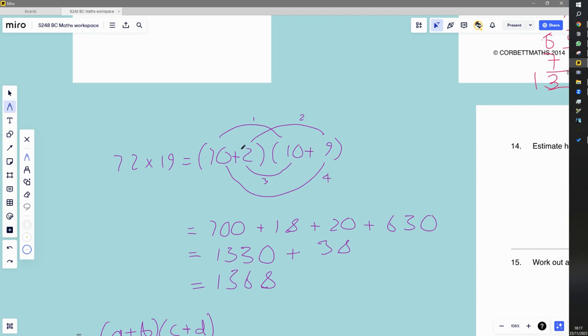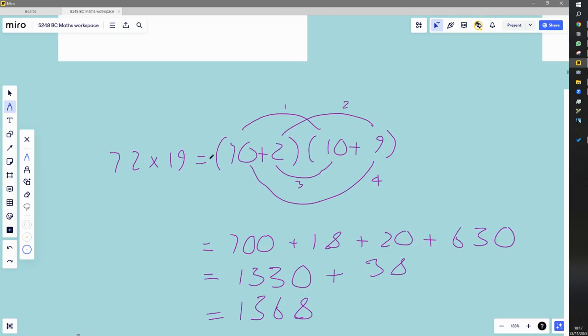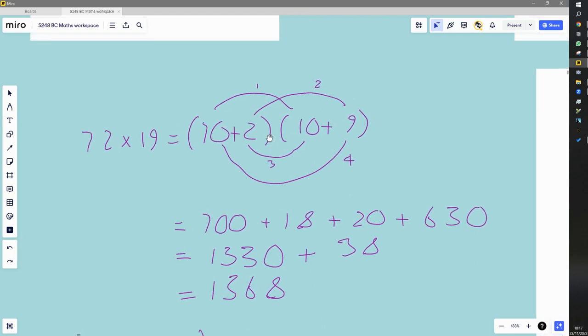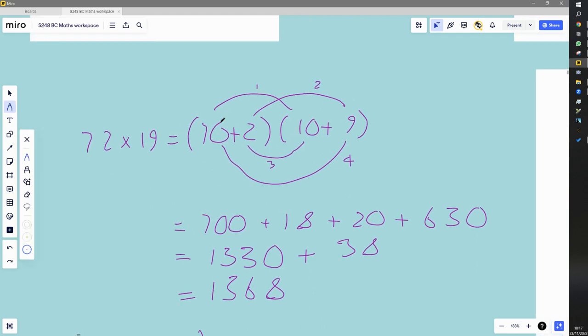So this method is very useful to learn because it's the method you're going to be learning in algebra as well. So what you can do is you take the 72 and you chop it up into 70 and 2, and you take 19 and you chop it up to 10 plus 9. And then you're going to just basically look at all the different combinations of multiplying all four numbers. And there will be four different combinations. You don't multiply the 7 by the 2. It's always something from one bracket multiplied by something from the other bracket.